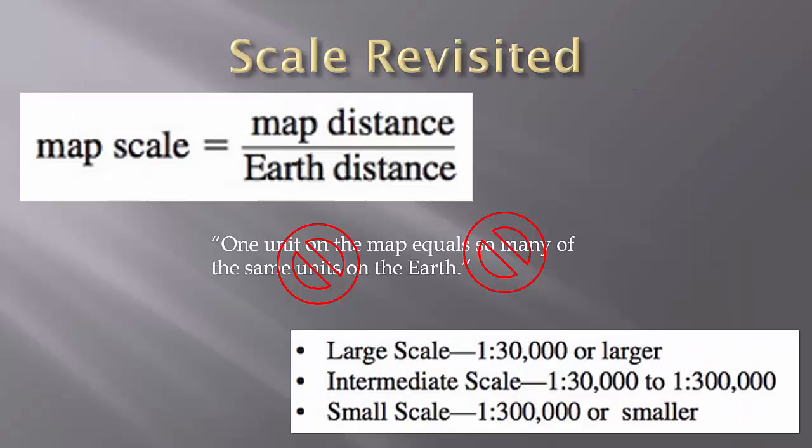Scale revisited very briefly. These additional comments will provide a useful further understanding of scale. In cartography, scale is represented by a ratio of map distance to earth distance. It is generally expressed as a representative fraction, RF, and will always contain unity in the numerator. RF scale can be expressed as a traditional fraction, such as 1 over 25,000, but is most commonly written as a ratio using a colon, such as 1 colon 25,000. On the bottom image, you can see 1 to 30,000 or larger. That is the use of the colon.